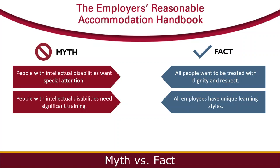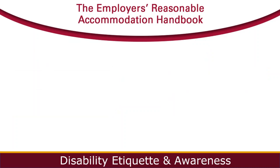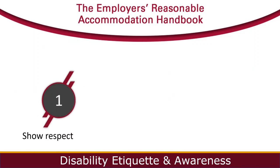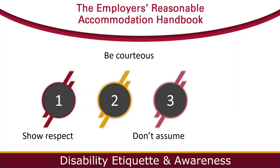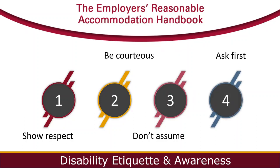One important way employers can help overcome the potential barrier misconceptions create is to provide disability etiquette and awareness training. We have four simple rules to share. The first is show respect: people with disabilities are people first, so concentrate on the person and not the disability. The next tip is be courteous: respect a person's personal space as well as the reasonable accommodations they may use to perform the job. Another tip is don't assume: each person is a unique individual with limitations and abilities, so don't assume what a person can or cannot do — let the person decide. And the final tip is ask first: if you think a person needs assistance, don't assume what they need and automatically provide that help. Just ask the person if they need help, and if they do, ask how you can help.